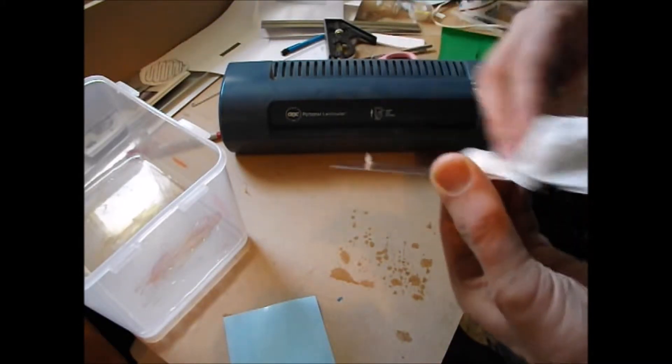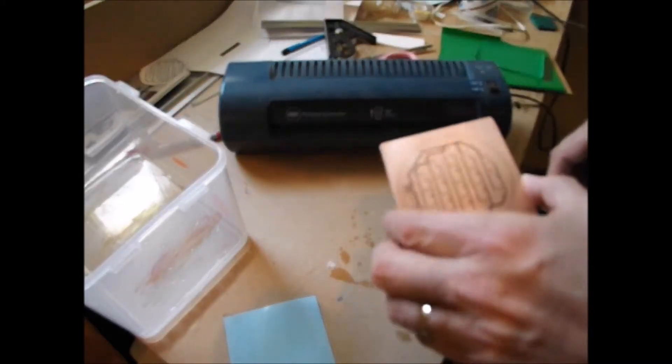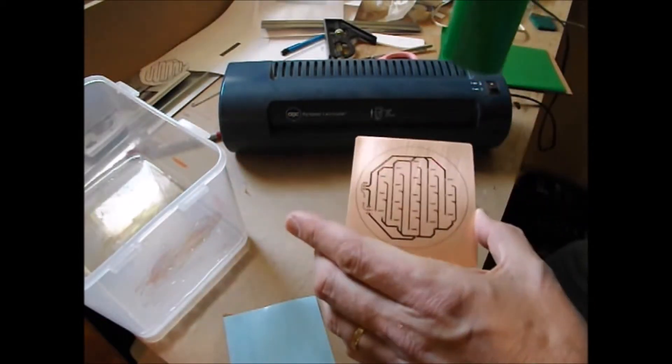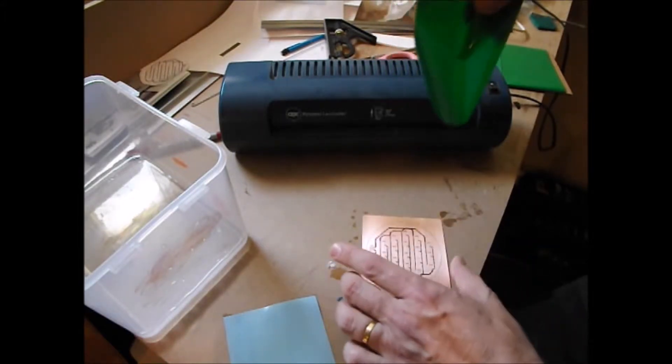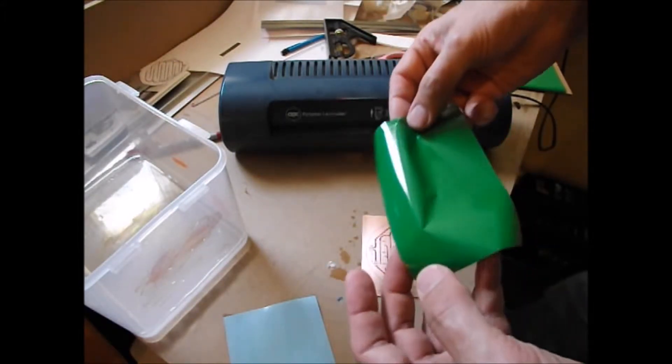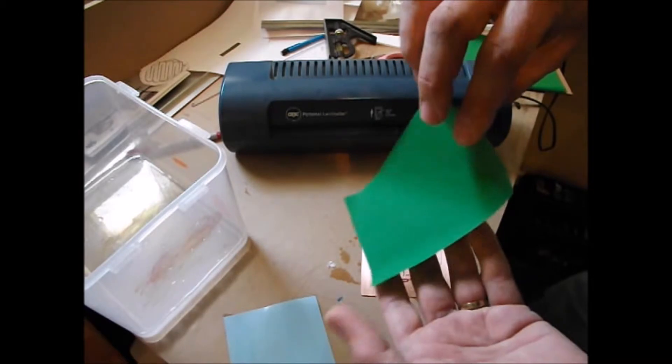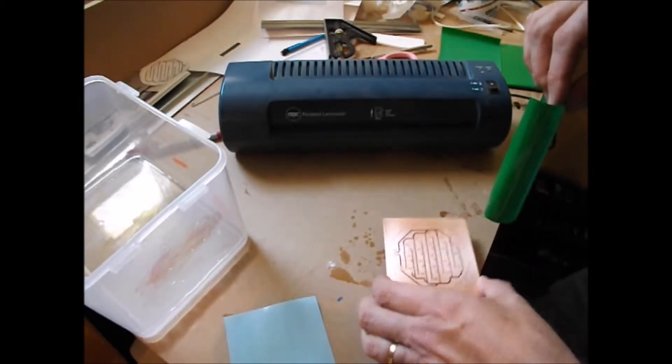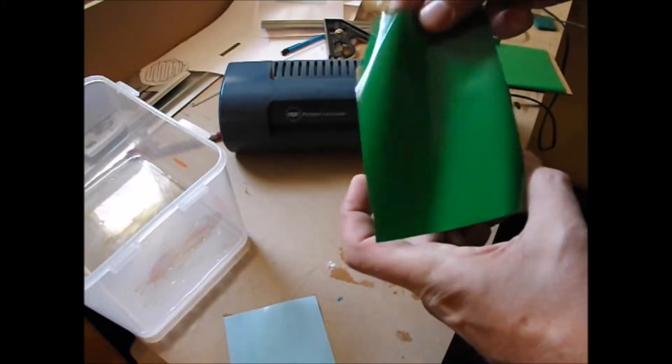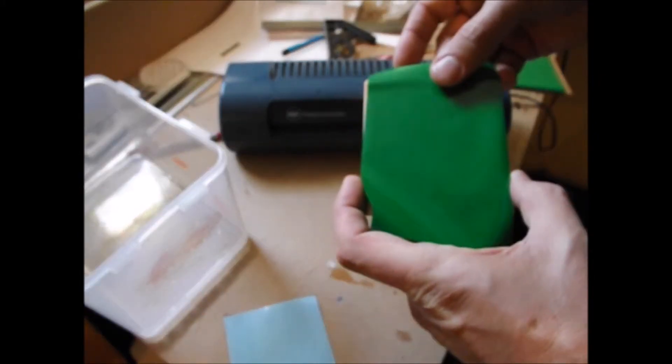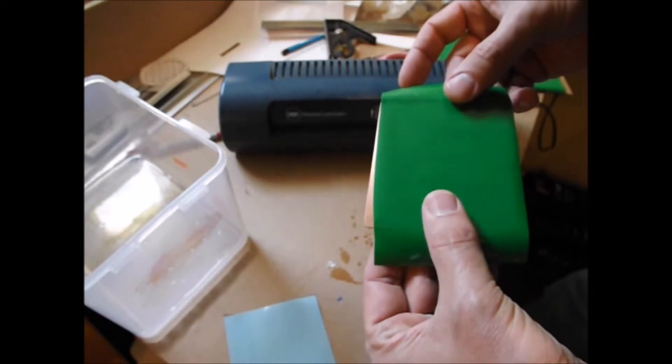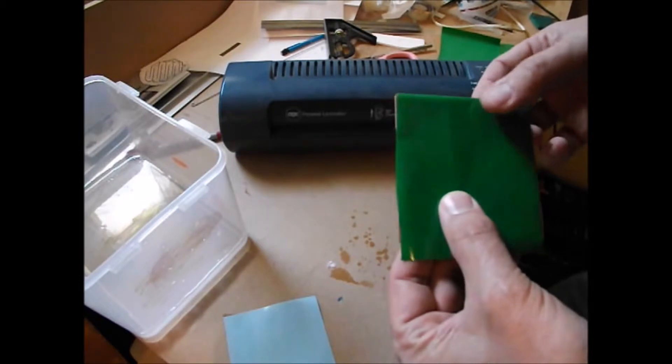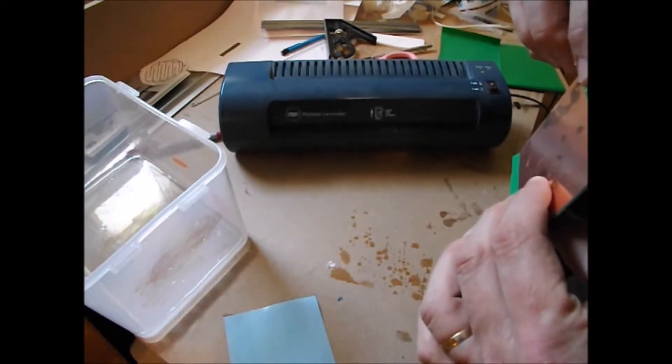Now the second step in this process is this green film. And it has two different sides. There's a very glossy side and a very matte finish side. And you take the very matte finish side and put it against your circuit print. Again the matte finish side against your circuit print. And make it a little bit long so it folds under.